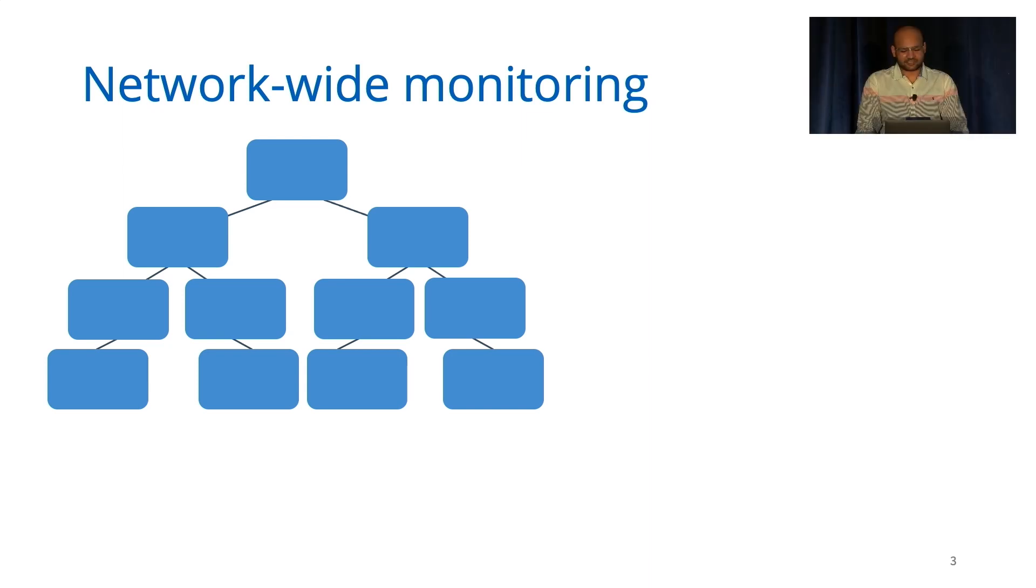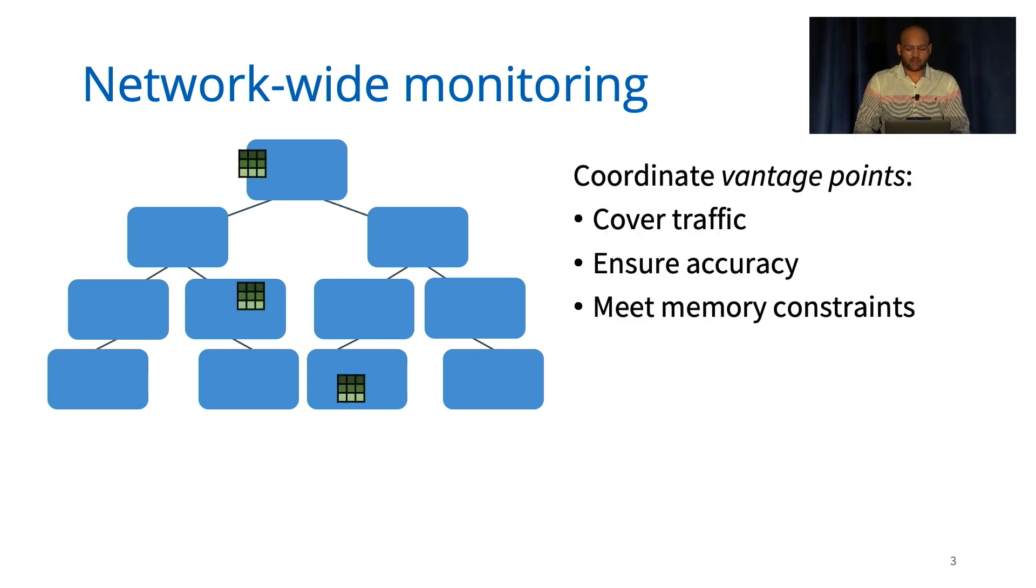Typically, to gauge network-wide statistics, an operator will coordinate measurement between a subset of carefully chosen vantage points, such that they're able to adequately cover the required traffic that they want to monitor, as well as meet any accuracy or device constraints.